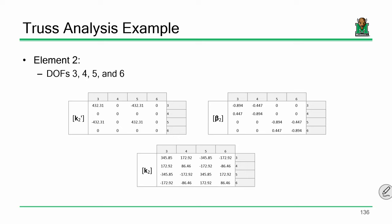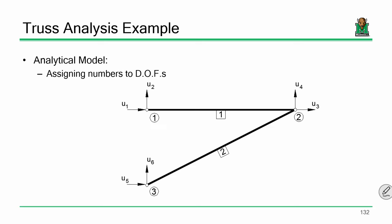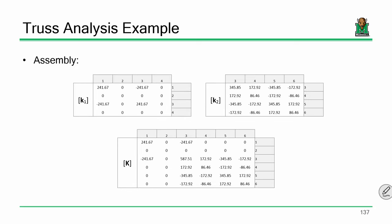Look at these codes: three, four, five, six — those are the member codes associated with element two. This first element has codes one, two, three, four — those values go right here. Three, four, five, six — those go right here. Any members that coincide, you add them up. Same deal as before, but with the extra step of rotating the member. That's what member rotation is all about — same spirit as before: develop a stiffness matrix, assemble.